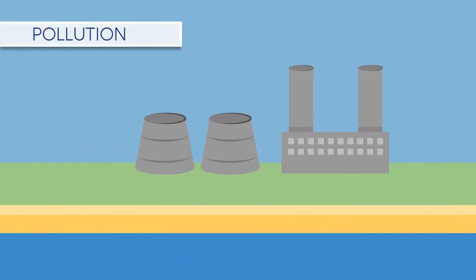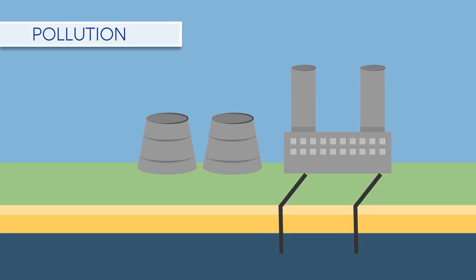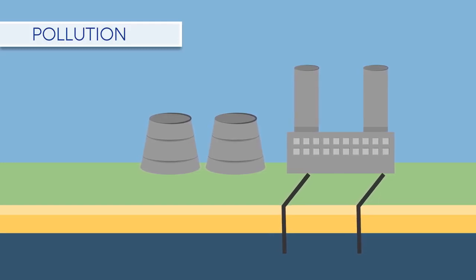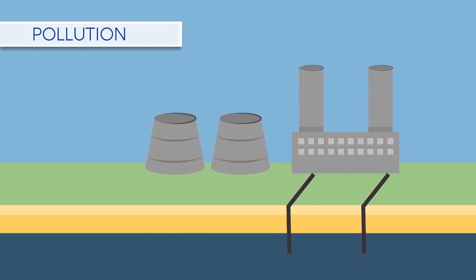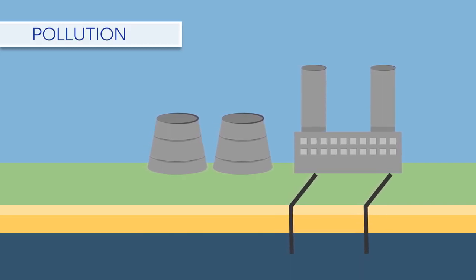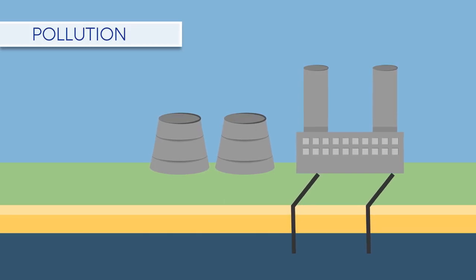Human activities are polluting the air and water. Toxic discharge into water from industrial processes has a negative effect on local aquatic species, by killing, weakening or affecting their ability to reproduce.